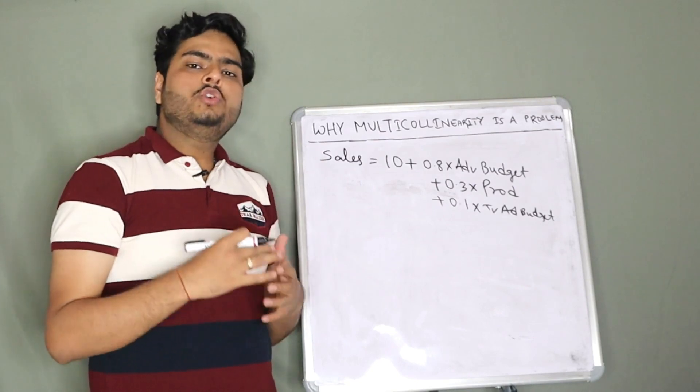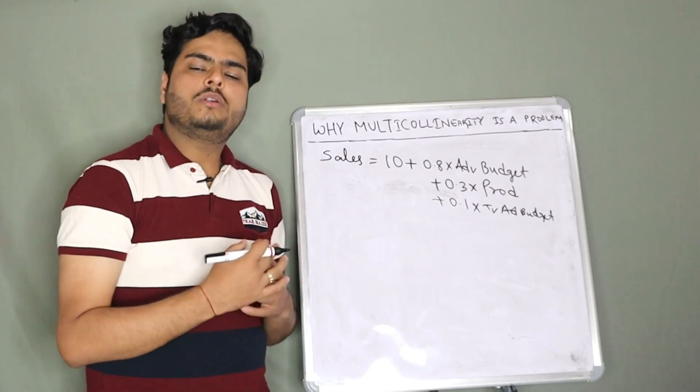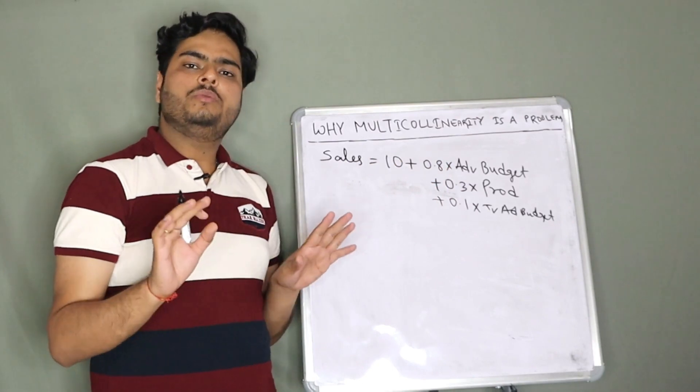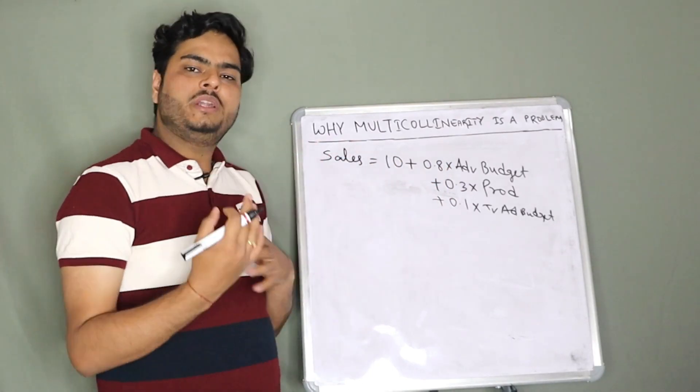In data capture, you have captured a duplicate variable or duplicate information. This is one way. This is called data-related multicollinearity.